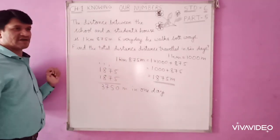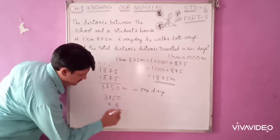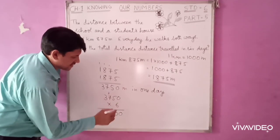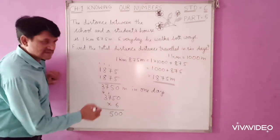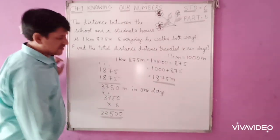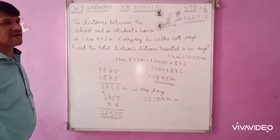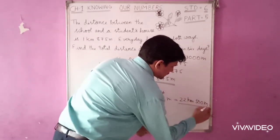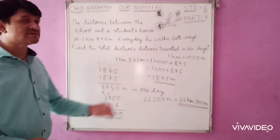Now he walks this much in one day. How will you find for 6 days? 3750 multiplied by 6. 0 multiplied by 6 is 0. 6 times 5 is 30, carry 3. 6 times 7 is 42 plus 3 is 45, carry 4. 6 times 3 is 18 plus 4 is 22. So it's 22,500 meters. If you convert back into kilometers, it will be 22 kilometers 500 meters. Total, he walks 22 kilometers 500 meters in 6 days.